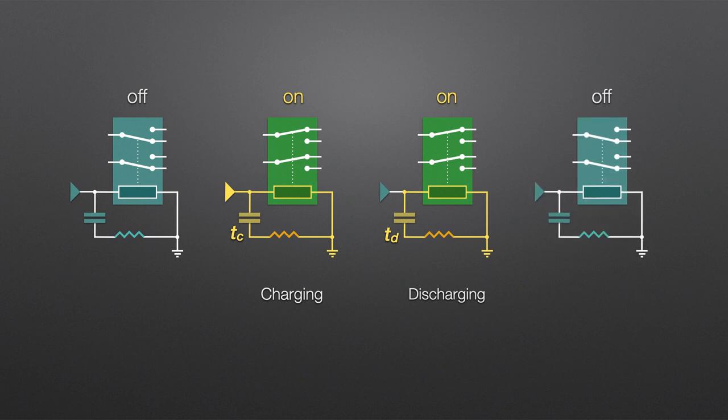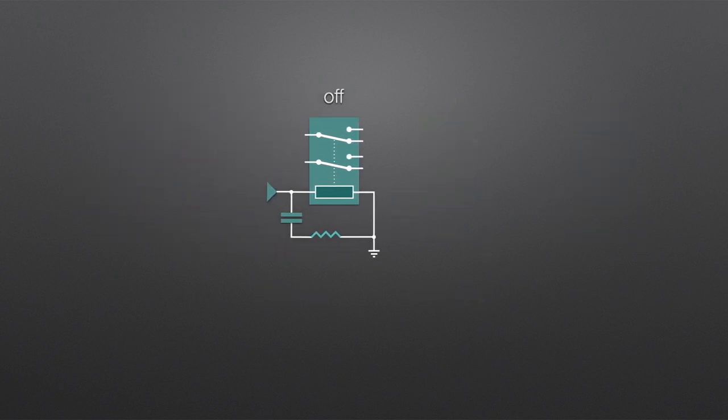Once the capacitor is depleted, we're back to our starting state awaiting a source of power. So we now have the basic relay and RC network design.